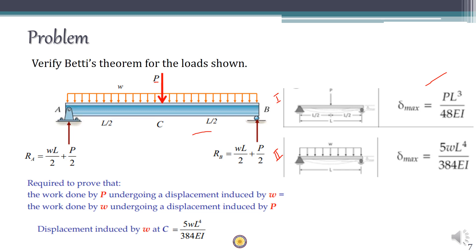To prove Betti's theorem, we must show that the work done by P on the displacements of system 2 equals the work done by W on the displacements of system 1. The work done by P on the displacements of system 2 is P multiplied by the central deflection due to W, which gives P times 5WL⁴ / 384EI, equal to 5PWL⁴ / 384EI.